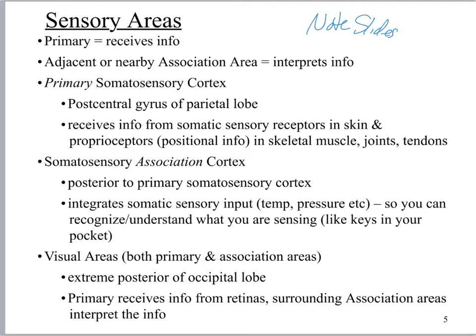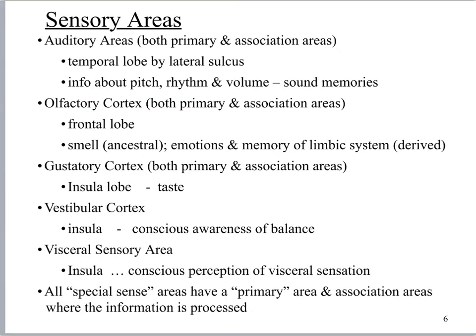We've got two note slides to go over giving you information about your primary somatosensory cortex, the somatosensory association area, and then the visual areas. What you'll notice is that all of these only have one to two bullets on them — they're really short, which means it's a lot less information than what you're going to find in your textbook or online. My tasks are only going to cover what's on these PowerPoints, so focus on these when you're trying to decide what to memorize.